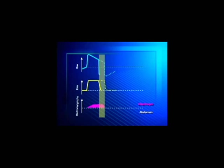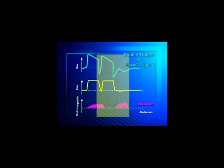Expiratory threshold — early cycling off. Setting a high expiratory threshold can cause problems because you finish the ventilator assistance before the end of the patient's neuro-inspiratory time. This usually causes double triggering. It means that the inspiratory time prolongs to the time that the patient can trigger a new breath, and the patient can get overinflated.